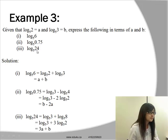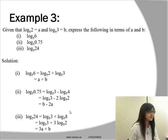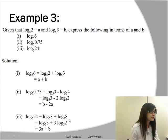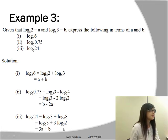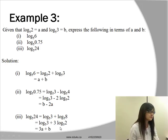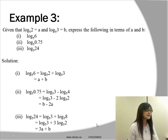For the last one, log base 5 of 24 equals log base 5 of 3 plus log base 5 of 8. We know that 8 is 2 to the power of 3, so we bring the 3 down to the front using the power law, as already done on the slide. Therefore the answer is 3a plus b.